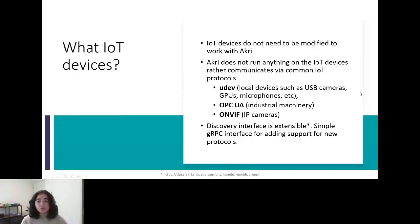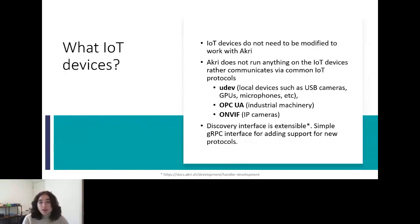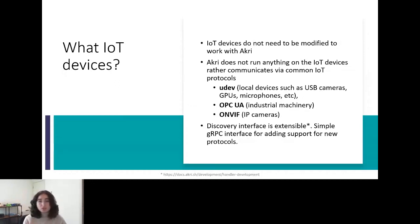There are a lot of tiny IoT devices out there on the edge. What IoT devices can Akri discover? One thing to note is that IoT devices do not need to be modified to work with Akri. Our goal is to not run anything on the devices themselves — they're oftentimes too small to even put anything on them. Rather, we want to communicate via the protocols that they already speak. We call this pattern of communication our discovery handlers, and they're oftentimes just protocol implementations. Currently, Akri has support for three discovery handlers.